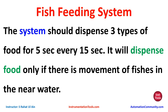The fish feeding system should dispense three types of food for five seconds every 15 seconds. It will dispense food only if there is movement of fishes in the water. There will be a sensor to detect the movement of fishes, and then there will be three valves which will dispense three types of food one by one. Each valve will remain open for five seconds, then the process will repeat.